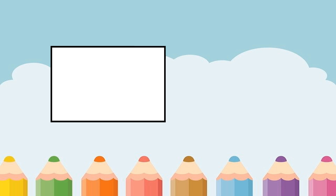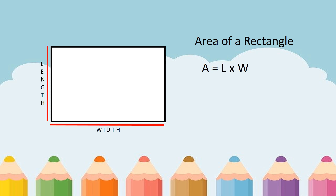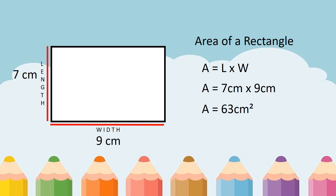The second plane figure that we have is a rectangle. How can we compute the area of a rectangle? We are going to use the formula A equals L times W, or area is equal to length times width. We have 7 centimeters for the length and 9 centimeters for the width. Seven centimeters multiplied by 9 centimeters is equal to 63 square centimeters. So this is the total area of the rectangle.